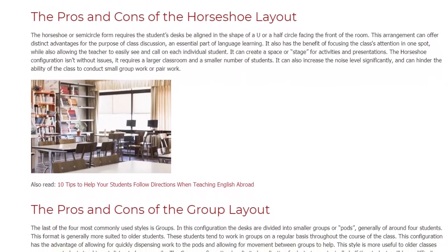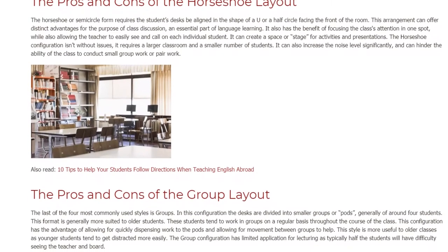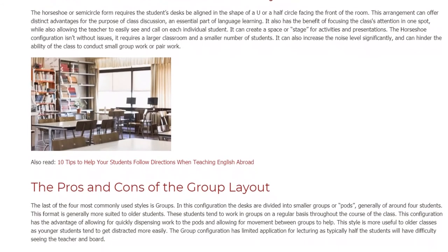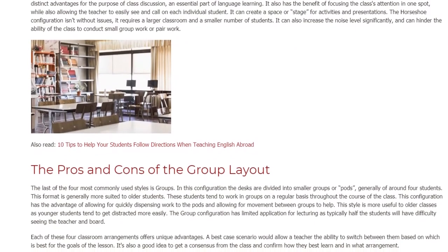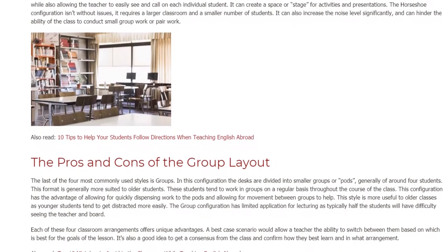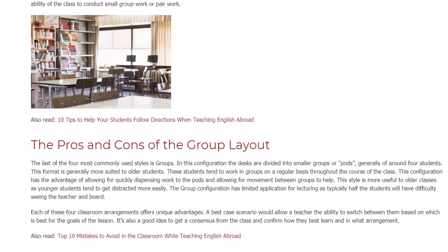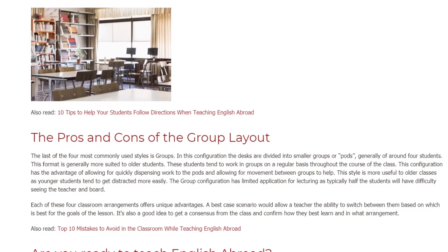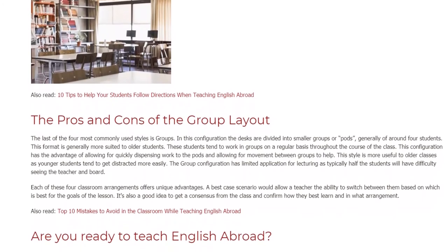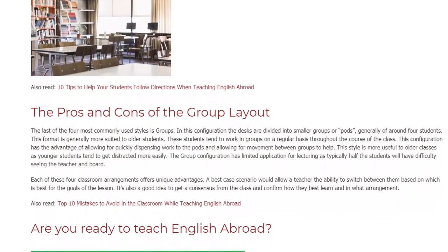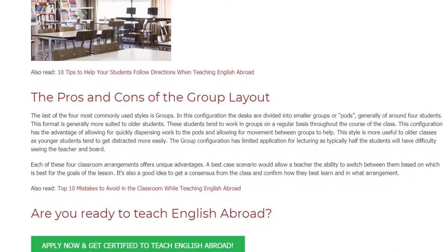The Pros and Cons of the Group Layout. The last of the four most commonly used styles is Groups. In this configuration, desks are divided into smaller groups or pods, generally of around four students. This format is generally more suited to older students, who tend to work in groups on a regular basis throughout the course. This configuration has the advantage of allowing work to be quickly dispensed to the pods and allowing for movement between groups. However, this style is more useful to older classes as younger students tend to get distracted more easily. The group configuration also has limited application for lecturing, as typically half the students will have difficulty seeing the teacher and board.